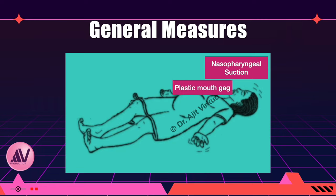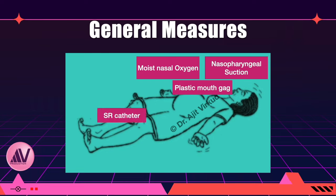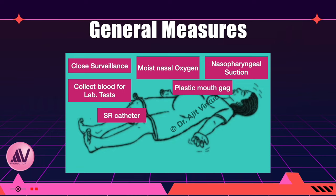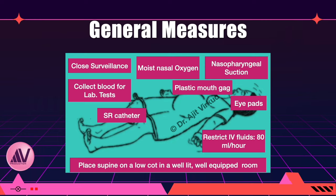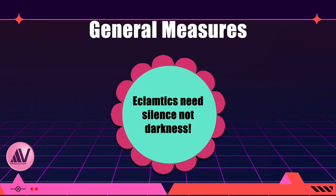Put a plastic mouth gag to prevent a tongue bite. Give moist nasal oxygen immediately after a seizure. Insert a self-retaining Foley's catheter to monitor urine output. Collect blood for lab investigations. Since these patients have decreased intravascular volume and leaky blood vessels, restrict fluids to about 80 ml per hour. The patient should be treated like an unconscious patient. Place her in a well-illuminated, aerated, spacious room equipped with an oxygen cylinder, suction machine, infusion pump, and an eclampsia kit — close to the nursing station. Remember: eclamptics need silence, not darkness.